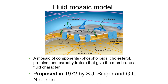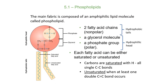The fluid mosaic model describes a mosaic of components. We have phospholipids, a layer of cholesterol, proteins, and carbohydrates that give the membrane a fluid character. There's a good video on this available via the YouTube link on Laulima. Phospholipids - remember from our macromolecules unit, these are our lipids or fats. The main fabric composing the cell membrane is an amphiphilic lipid molecule called the phospholipid.